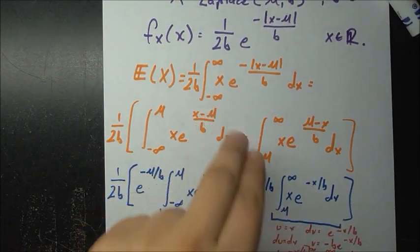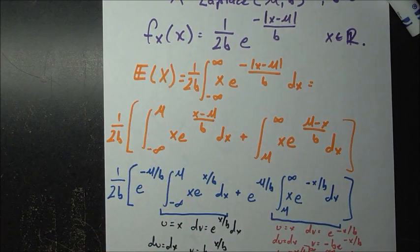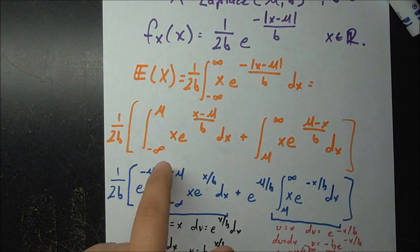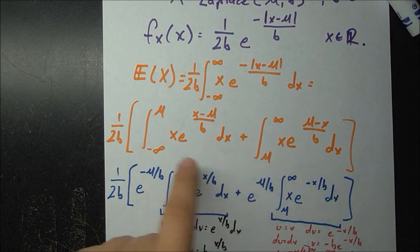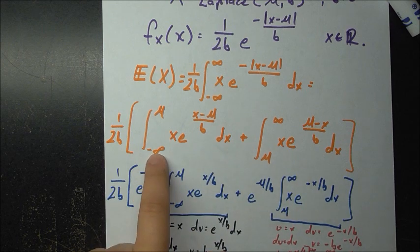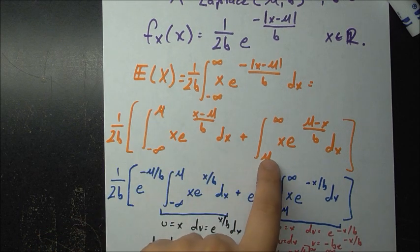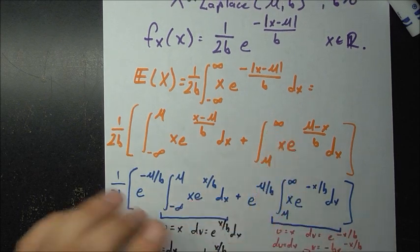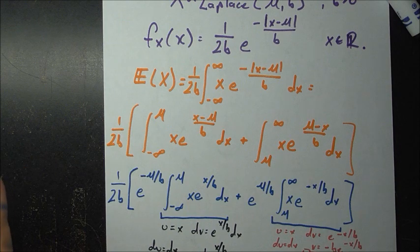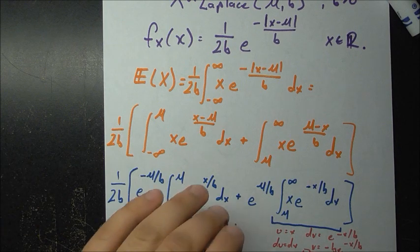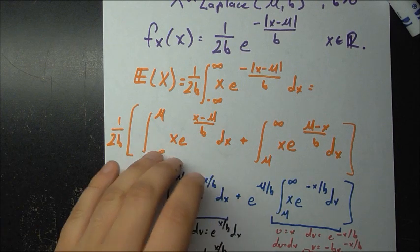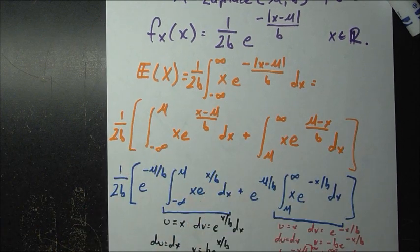We are going to break up the integral into two integrals: the piece from minus infinity to mu, and the piece from mu to infinity. We have not changed anything — we are just taking it one part at a time.